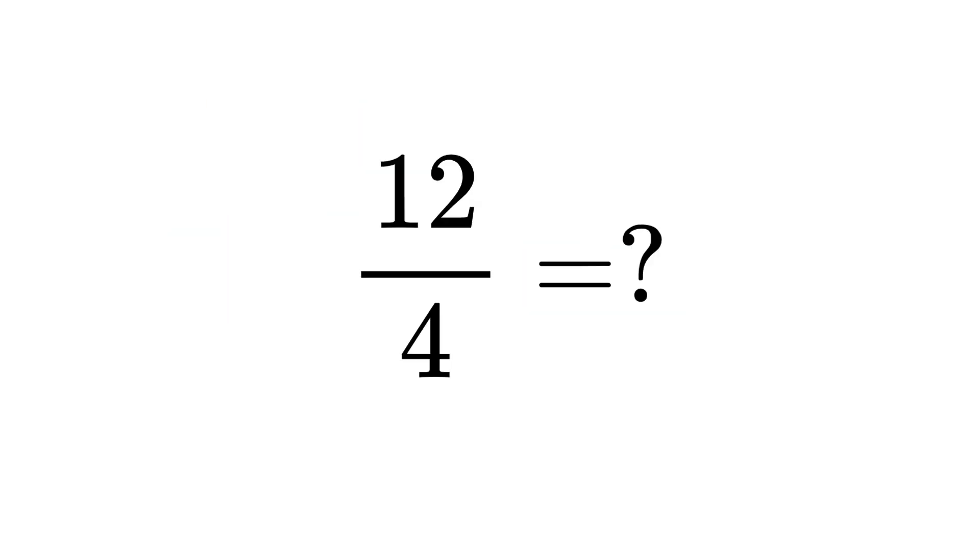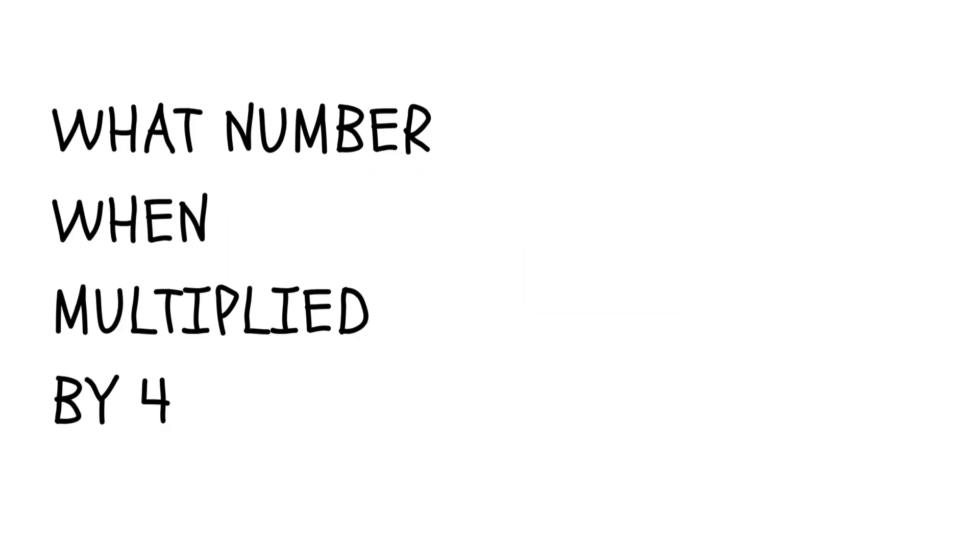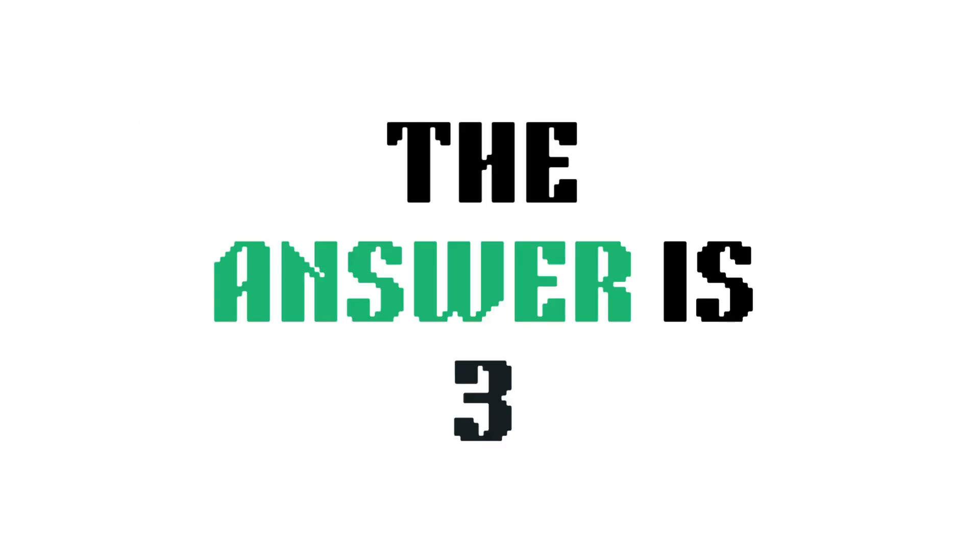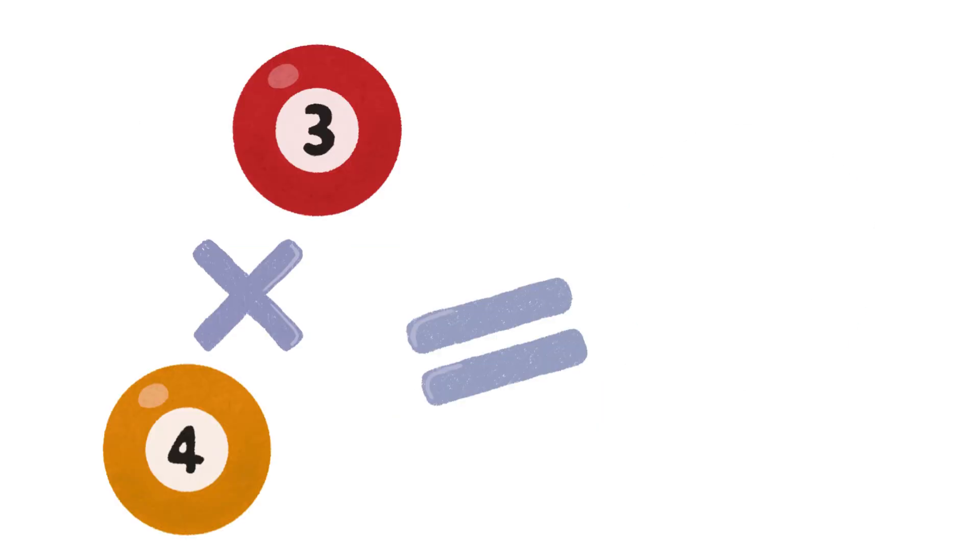When we ask you what is 12 divided by 4, we are really asking a different question. We're asking, what number, when multiplied by 4, gives us 12? The answer is 3, because 3 times 4 is 12. This relationship is the key,